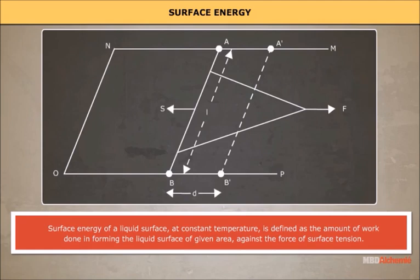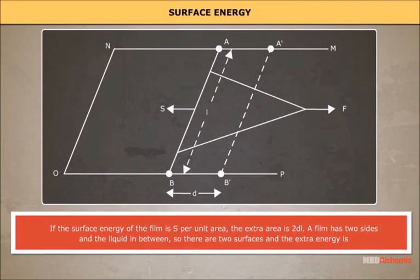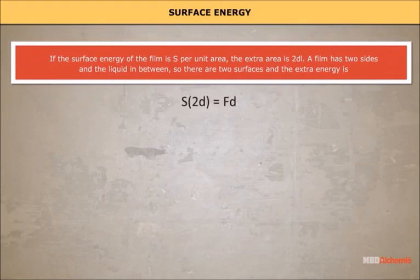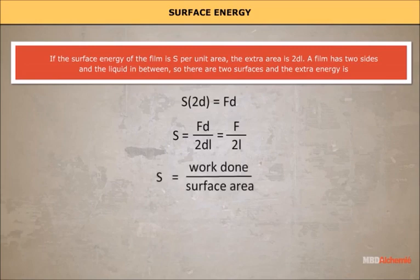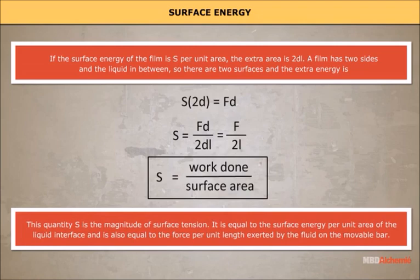Let this internal force be F. The work done by the applied force is F·D. From conservation of energy, this is stored as additional energy in the film. If the surface energy of the film is S per unit area, the extra area is 2DL (a film has two sides, so two surfaces), and the extra energy is S × 2DL = F·D. Therefore S = F·D / 2DL = F/2L. Thus S equals work done divided by surface area, and is the magnitude of the surface tension.